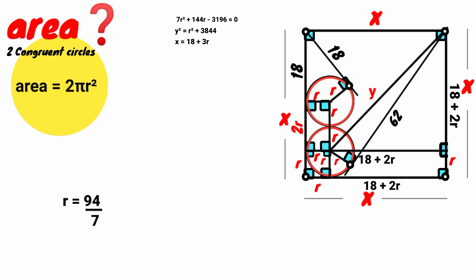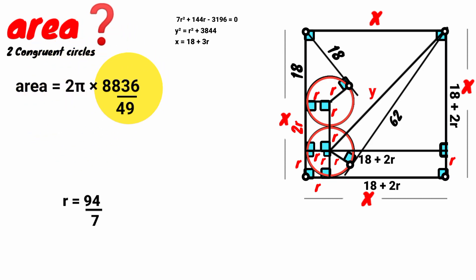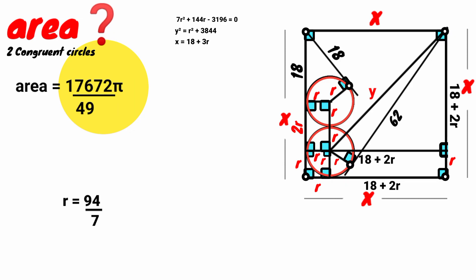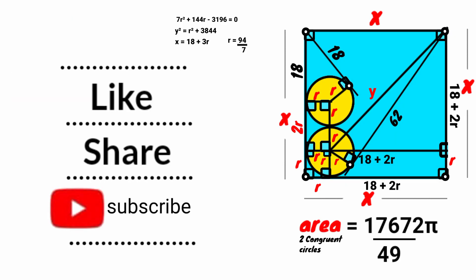Substituting r = 94/7: r² = 8,836/49. Total area = 2π × (8,836/49) = 17,672π/49. So the area of the two congruent circles equals 17,672π/49 square units. Thank you for watching. Please subscribe, like, share, and comment, and also turn on notifications.